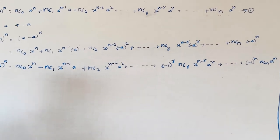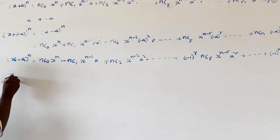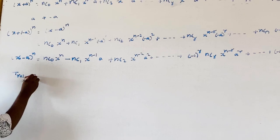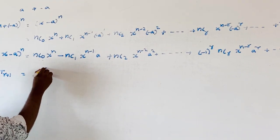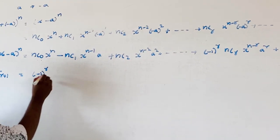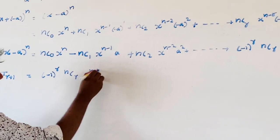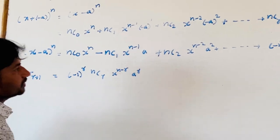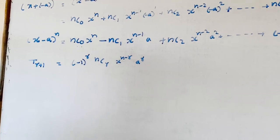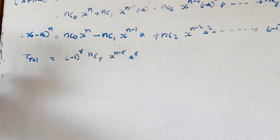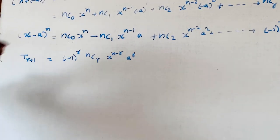Now in this expansion, the general term T(r+1) is equal to (-1)^r · NCR · x^(n-r) · a^r. This is the binomial expansion of (x - a)^n.